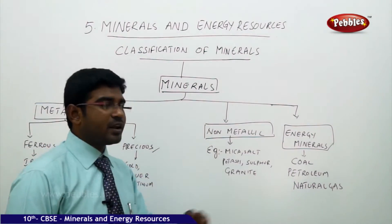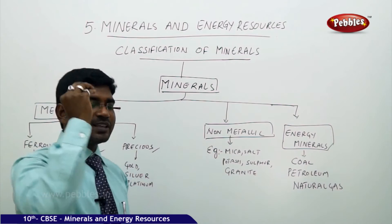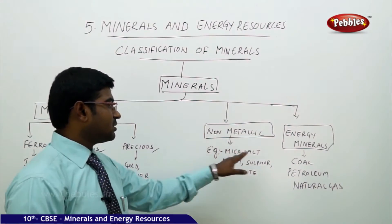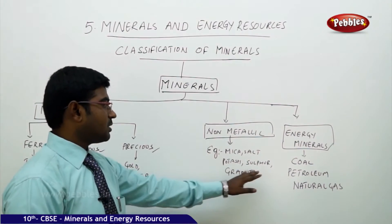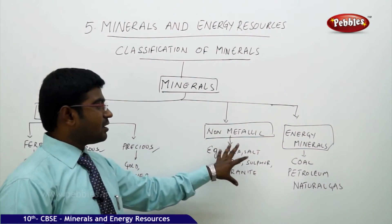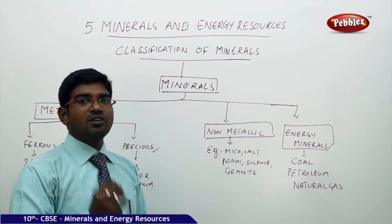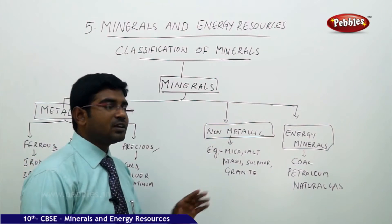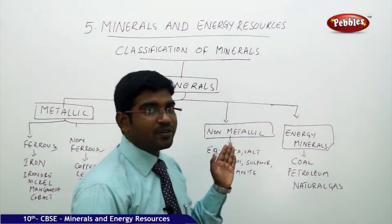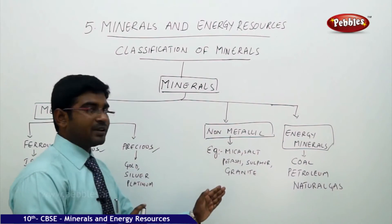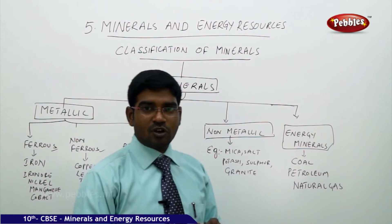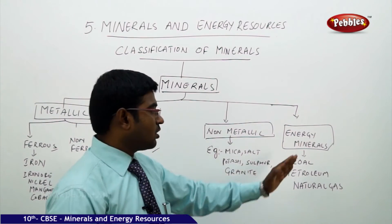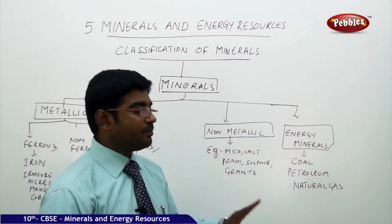Now moving on to non-metallic minerals — these are minerals where the influence of metals is absent. Examples include mica, salt, potassium, sulfur, and granite. In these minerals you do not find any hard metallic elements, which is why they are called non-metallic minerals.